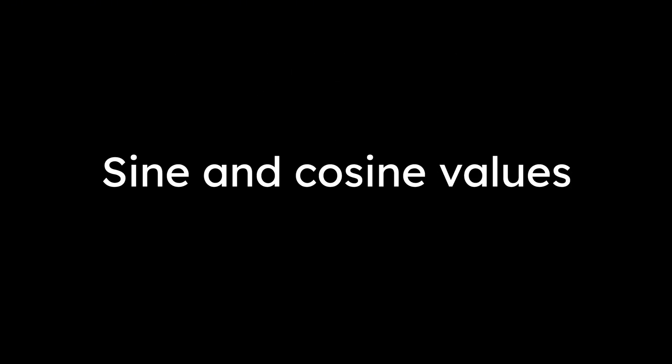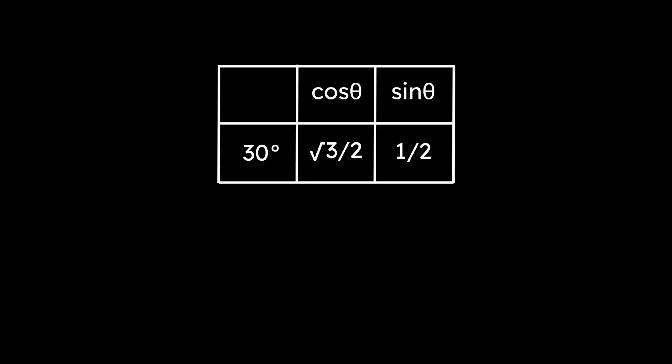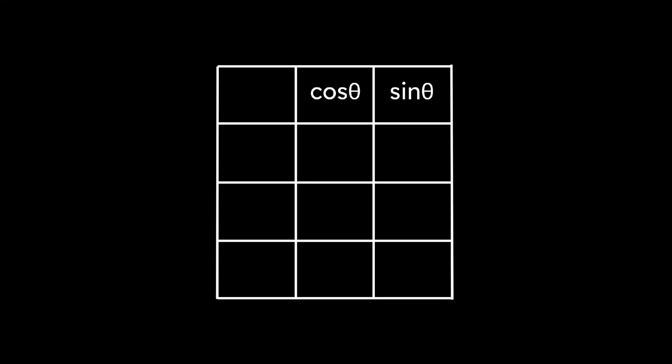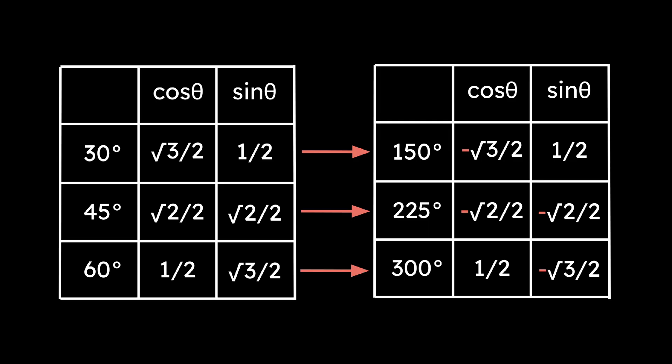There are a few angles whose sine and cosine values are worth memorizing because they appear frequently: 30 degrees, 45 degrees, and 60 degrees. Once you know these values, you can get the sine and cosine of related angles just by changing the signs.